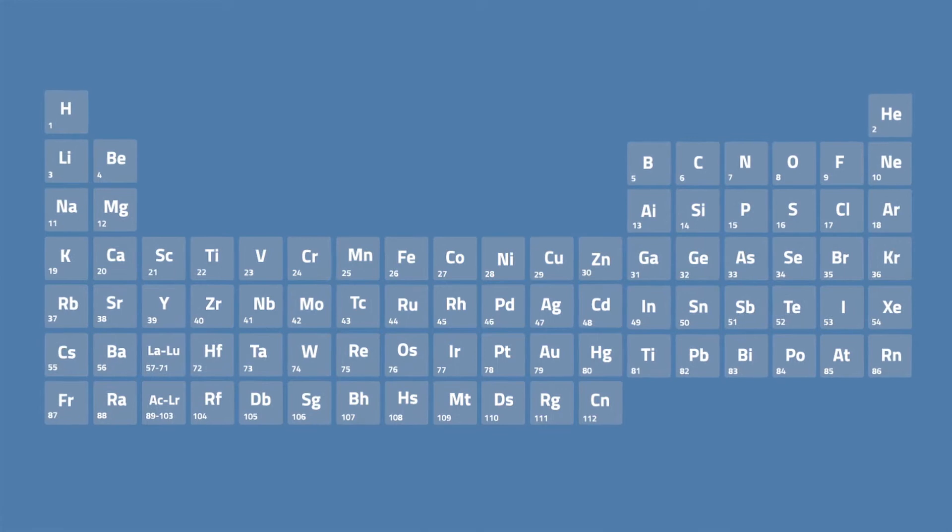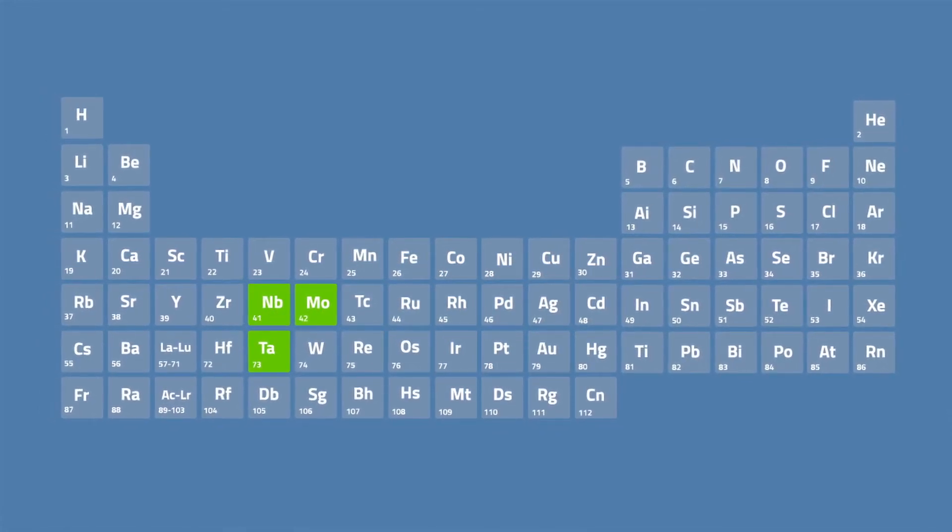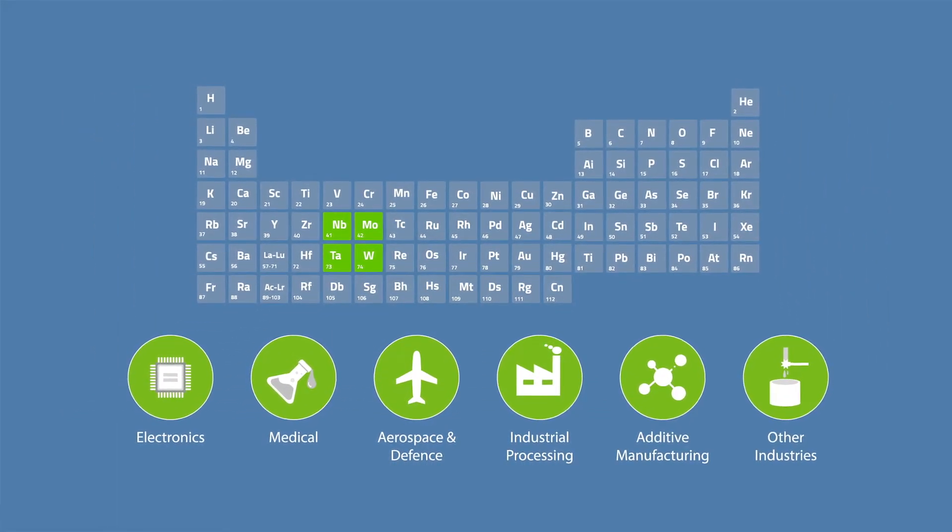Their sustainably-sourced refractory metals, such as molybdenum, tantalum, niobium, and tungsten, all play a crucial role in our interactions with a modern and evolving society.